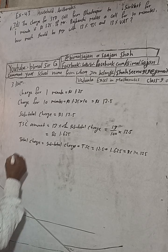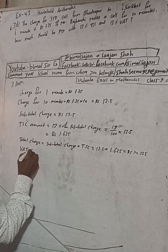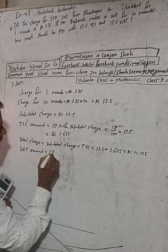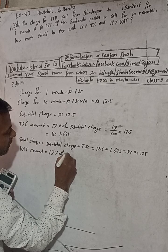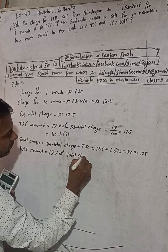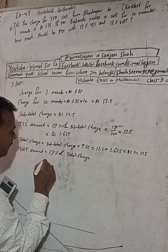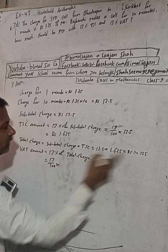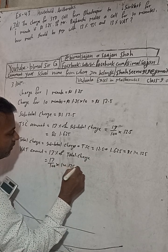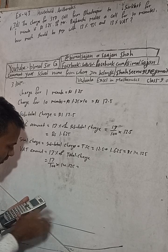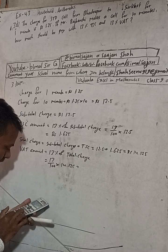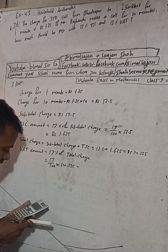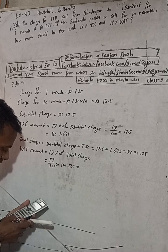Now in this total charge we can calculate the VAT amount. VAT amount is equal to 13% VAT, so 13% of total charge. 13% means divide by 100, and the total charge is 14.125. So we multiply 14.125 into 13 and then divide by 100.